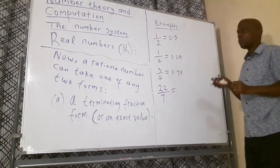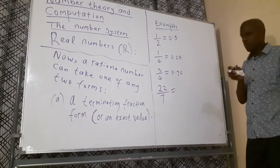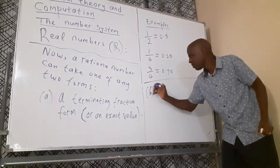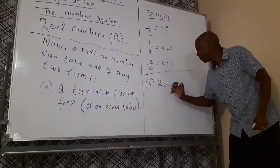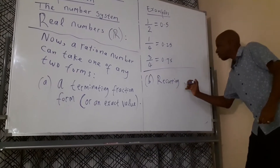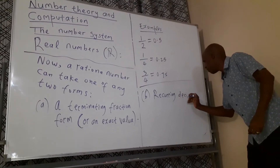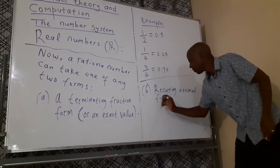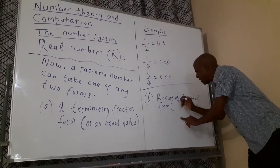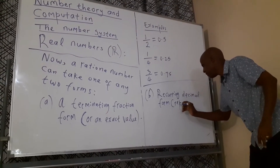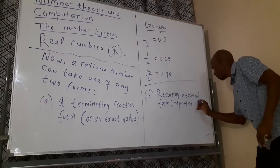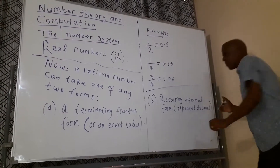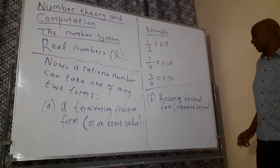Moving on to part B — the second form is called a recurring form, also known as a recurring decimal form, or simply a repeating decimal. So what are the examples of a repeating decimal?